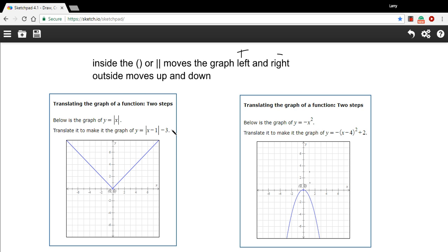The change outside, the number added or subtracted outside, is going to move it up or down. A positive number is going to move it up, a negative number is going to move it down.